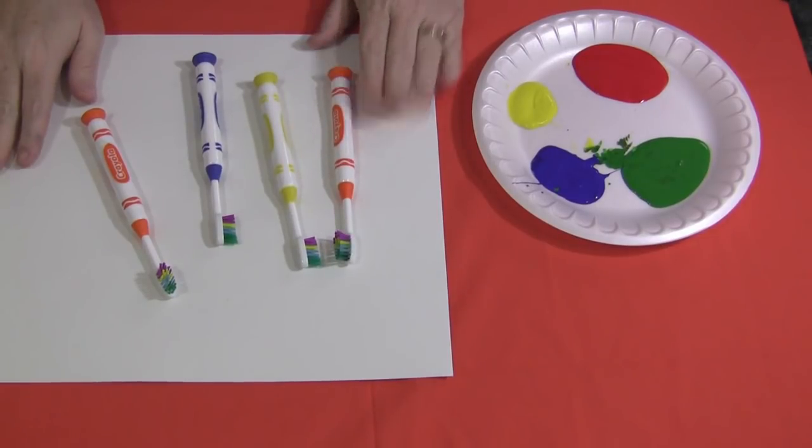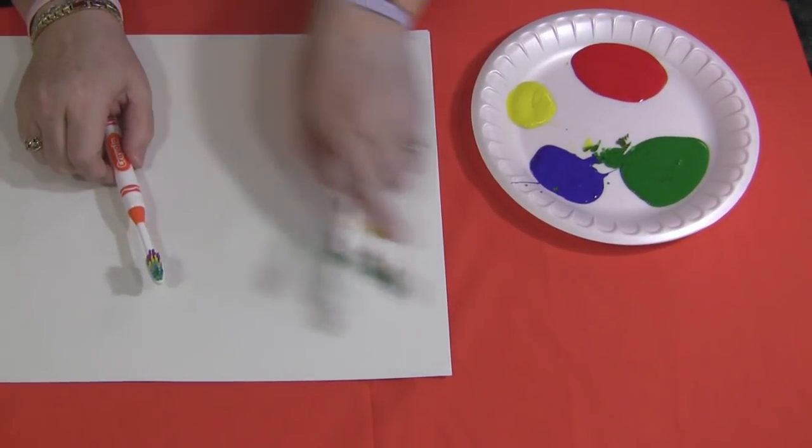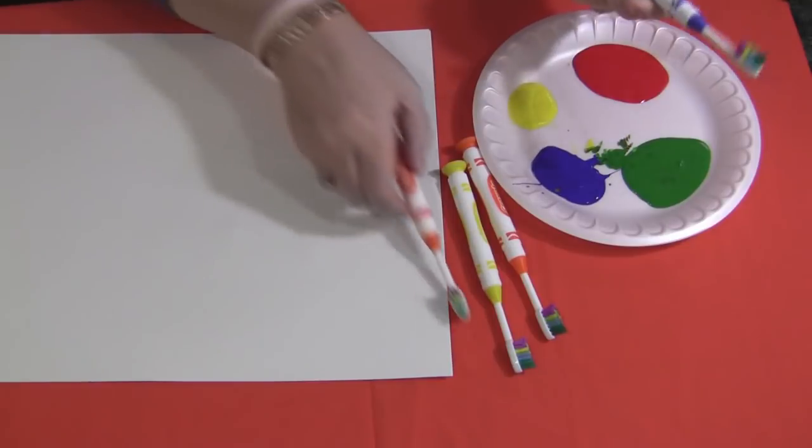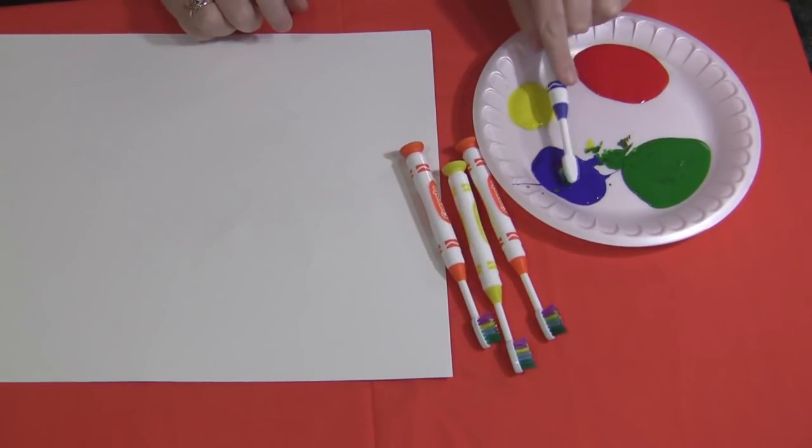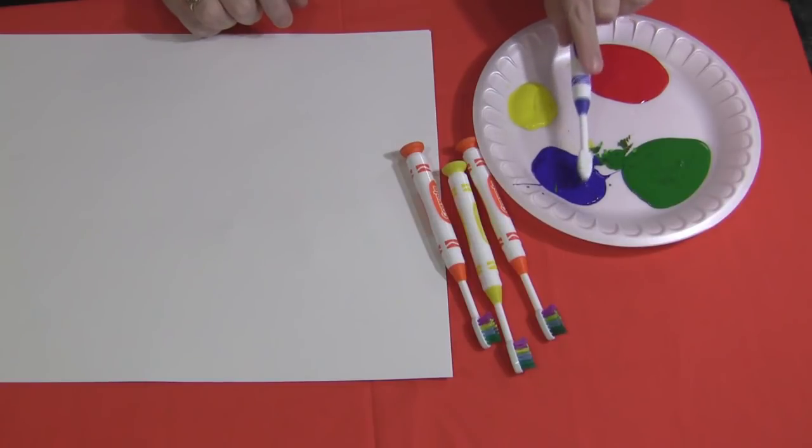You'll need to have paper and of course paint, and the children would just take their toothbrush and dip it into the paint. This is good for fine motor skills development as well. They have to be able to control the brush into the paint.